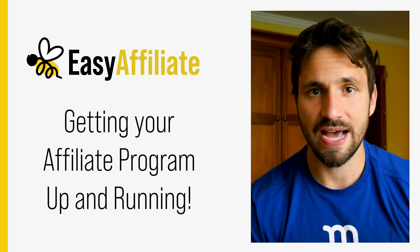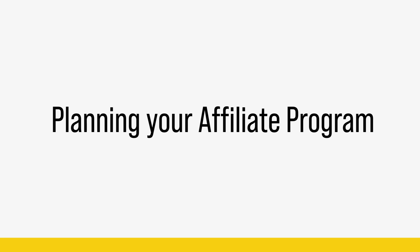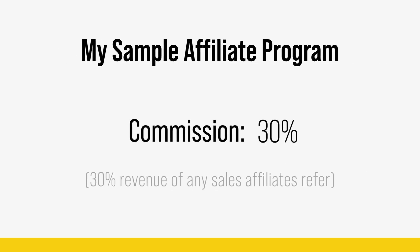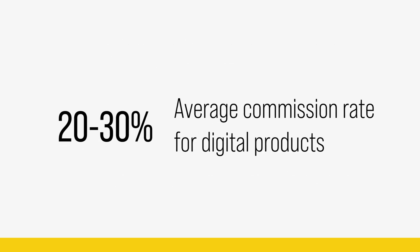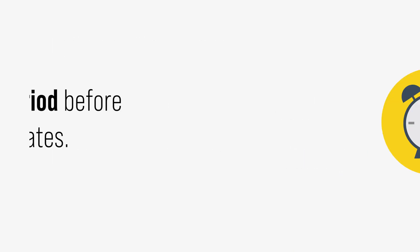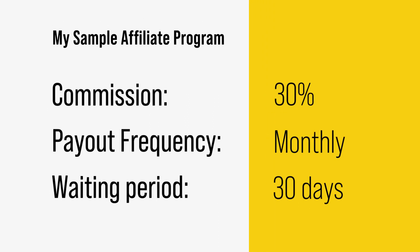Before we dive into setting up Easy Affiliate, you need to outline how you want your affiliate program to work — what commissions you're going to offer affiliates, when you want to pay them, and more. For this video I'll be setting up a 30% commission, meaning affiliates get 30% of revenue for any sales they bring in. Across the industry for digital products you'll usually see around 20 to 30%. I'll also be paying monthly, and I recommend having a waiting period — in this example, 30 days — before paying affiliates to account for refunds.